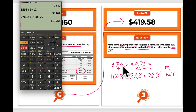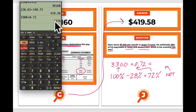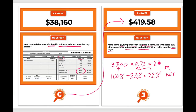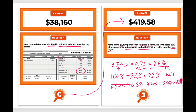So let's calculate: 3300 × 0.72 = $2,376. That's the net pay. You can also do this in two steps: 3,300 × 0.28 to find the withholding amount, then subtract it from 3,300 — you get the same answer. I just prefer the one-step version. So $2,376, you walk around the room and boom, we're at card E.